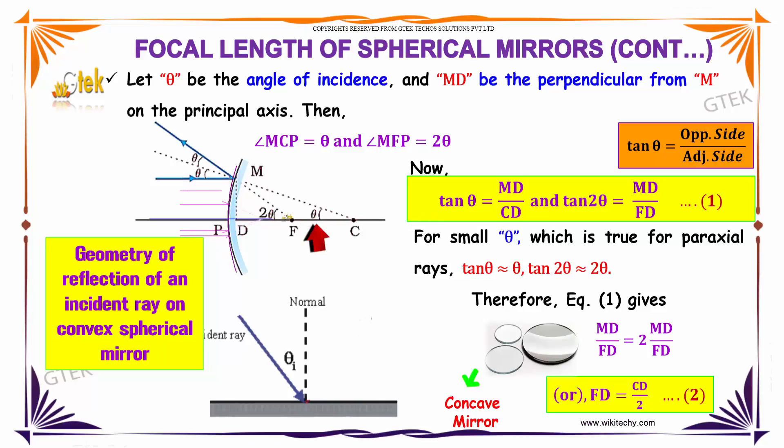As you know, tan theta is equal to MD divided by CD, and tan 2 theta is equal to MD divided by FD.